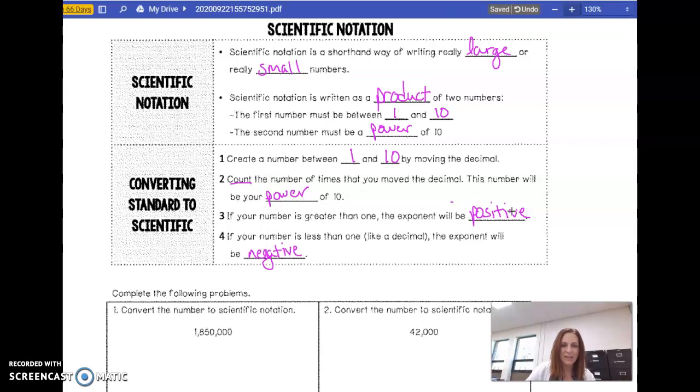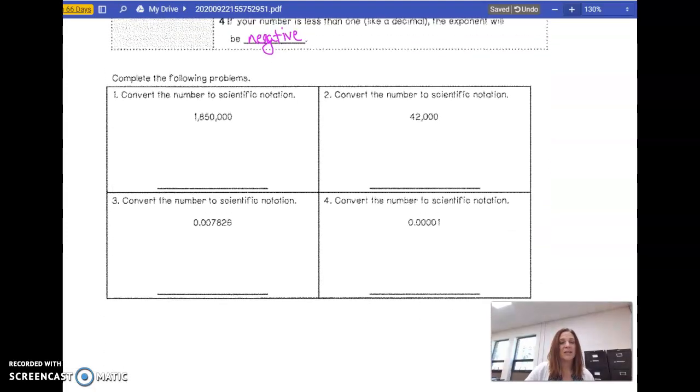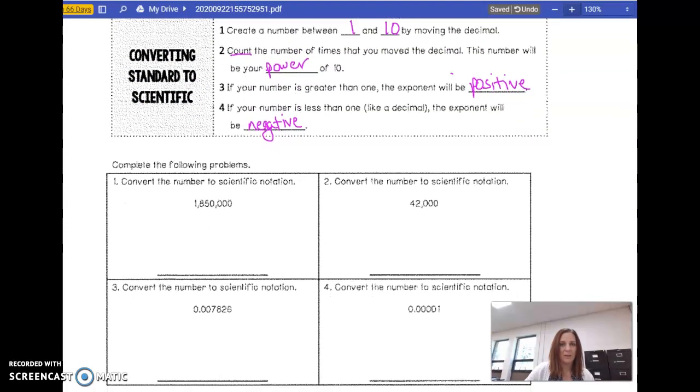Okay, so let's take these conversion rules here and let's practice. Okay, so convert the number to scientific notation. Alright, so the first thing is create a number between 1 and 10 by moving the decimal. Well, what does that mean? Our decimal point is right here. There is no decimal point written, but we put it at the end. If there was one there, we would just go to that one. Now, I want to create a number between 1 and 10 by moving it.